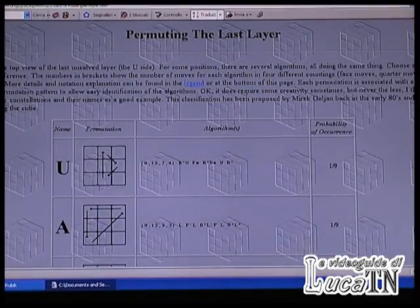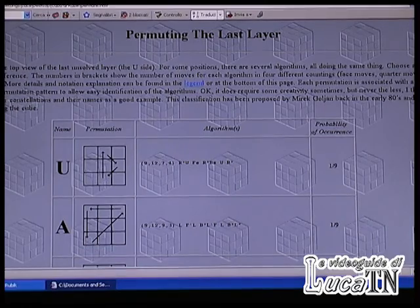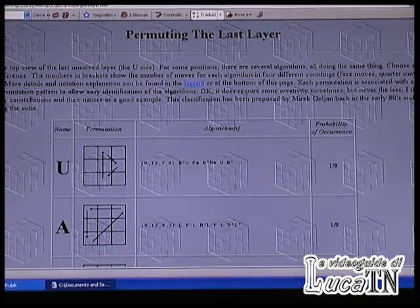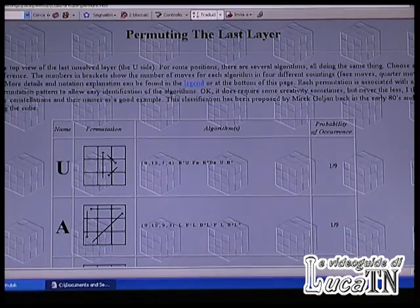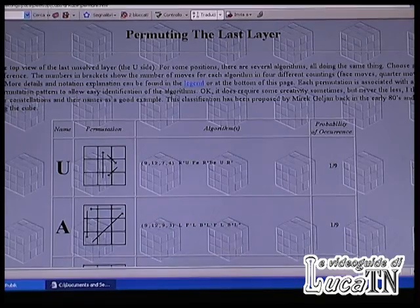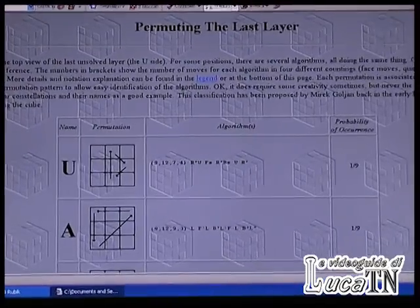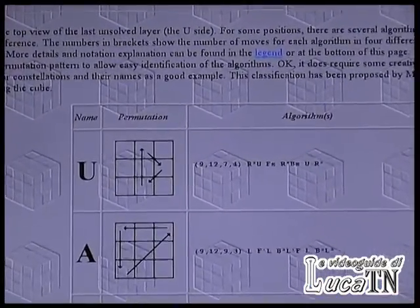Permuting the last layer — these are the last 13 situations that may occur while solving the cube in the final part. After orienting all the pieces in the last layer on the top position of the cube, these are the 13 cases that may occur.